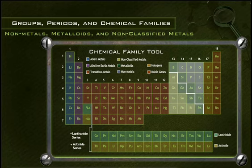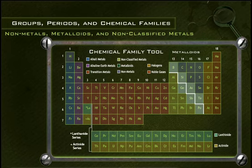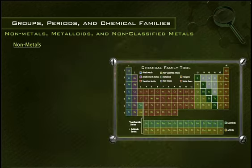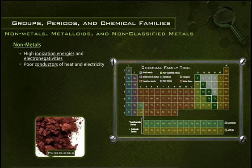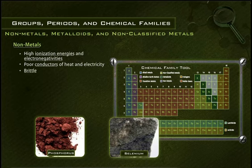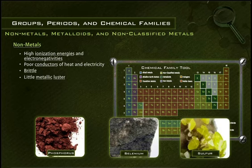Groups 13 through 16 represent three informal chemical families: nonmetals, metalloids, and other non-classified metals. Nonmetals have high ionization energies and electronegativities, and are usually poor conductors of heat and electricity. When nonmetals are in solid form, they are usually brittle and have little metallic luster.